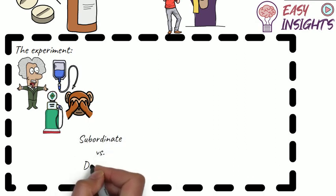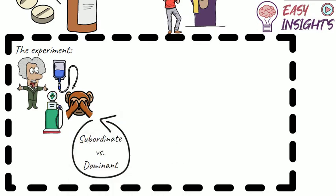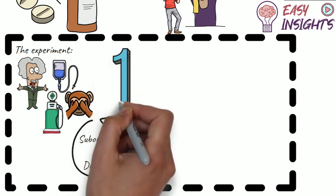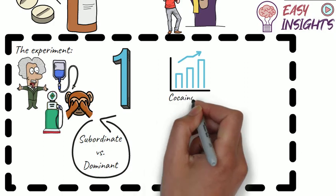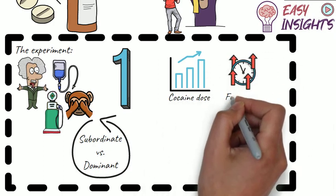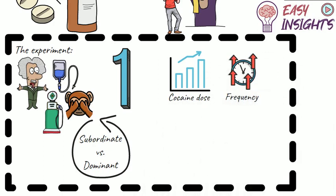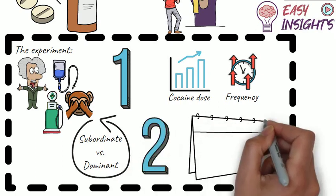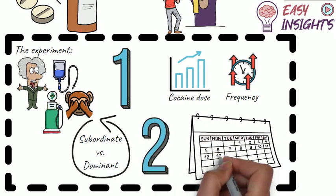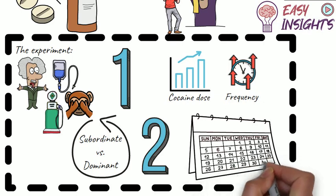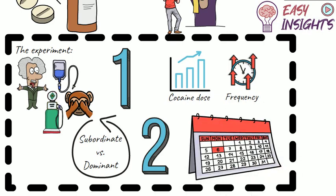Here are the findings, and they vary for subordinate and dominant monkeys. First, during these sessions, subordinate monkeys had significantly higher and increasing intakes of cocaine. Second, subordinate monkeys also exhibited a greater day-on-day increase in the amount of cocaine they administered, suggestive of an addiction.